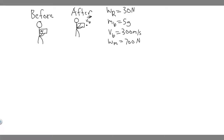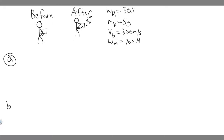So how do we solve this? We're going to use the law of conservation of momentum, which basically tells us the momentum before has to be equal to the momentum after. For this problem there are two different scenarios. Let's start with Part A — we're trying to find the recoil speed of the rifle.